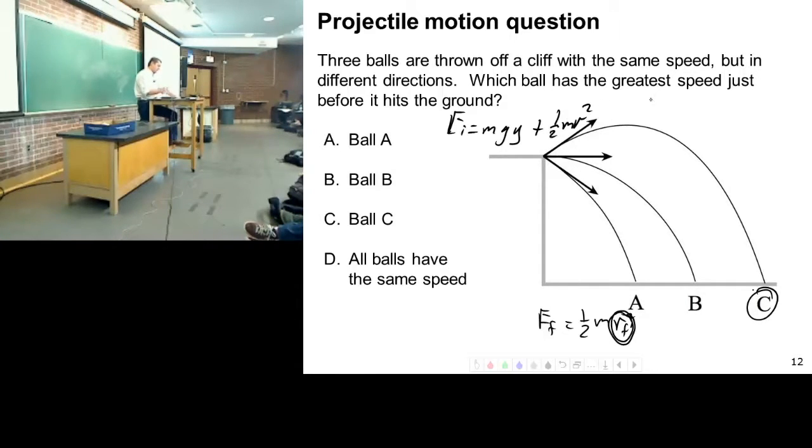Are we comfortable with the idea that they all start with the same initial energy? Because they start at the same height and they have the same speed. We're not comfortable with that idea? The directions are different, but V in kinetic energy doesn't determine direction, right? So let's just look at the beginning. The very beginning, ignore which direction they're going. They start from the exact same height, right?